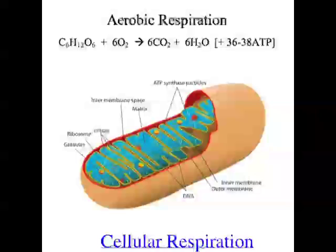Aerobic respiration makes quite a few molecules of ATP — 36 to 38 — but you've got to have oxygen present. In reality, glucose plus oxygen going to carbon dioxide plus water is a simplification of aerobic respiration. It's really a series of chemical reactions which can be divided into three stages: glycolysis, the Krebs cycle, and electron transport. Glycolysis is the splitting of one glucose molecule, which produces pyruvate. That then goes into the Krebs cycle and the electron transport chain, and all those things together produce the ATP.